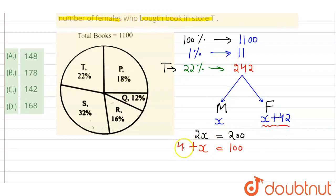Look, if you have x plus x plus 42 equals 242, solving this gives x equals 100. So females bought x plus 42, which is 142. And 142 is our question's right answer, which is option C. Thank you.